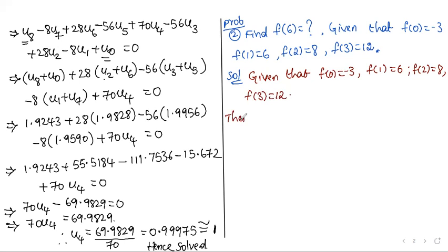We will write the given data in tabular form. The table has columns x and y, with x values 0, 1, 2, 3 and corresponding y values minus 3, 6, 8, 12.